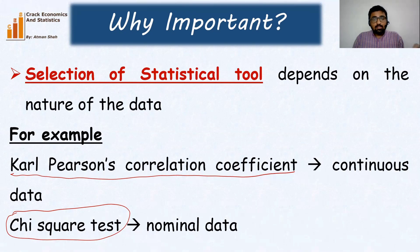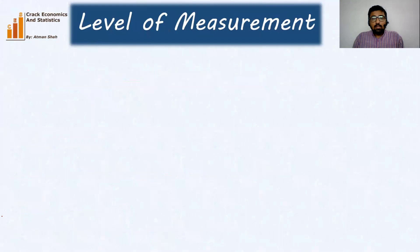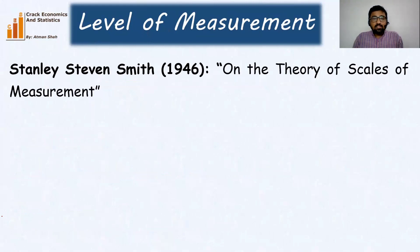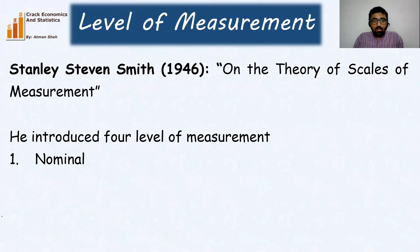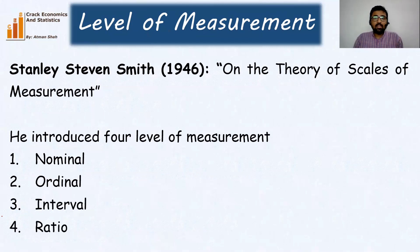So the selection of the statistical tool, the selection of the statistical test, depends on the nature of the data. That is why consideration of the level of measurement is very important when we do the analysis. Stanley Stevens in 1946 developed four levels of measurement in his article on the theory of scale of measurement: first is nominal, second is ordinal, third is interval, and fourth is ratio.